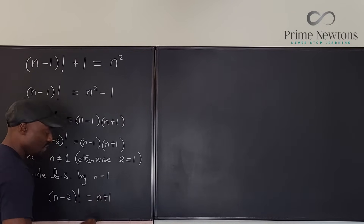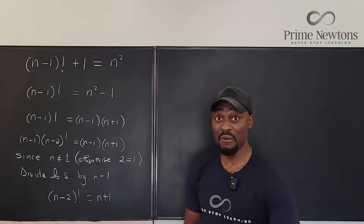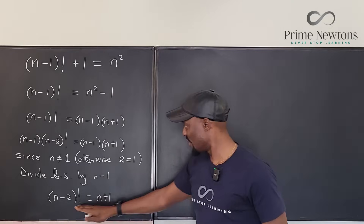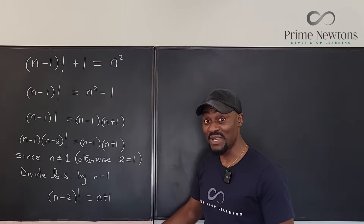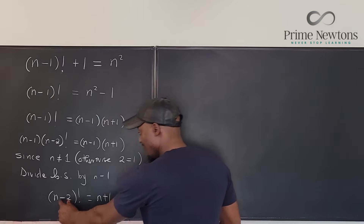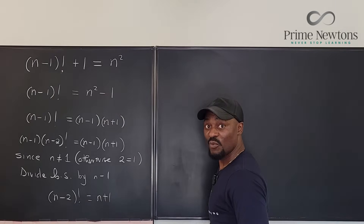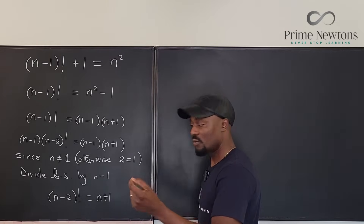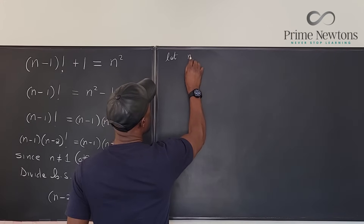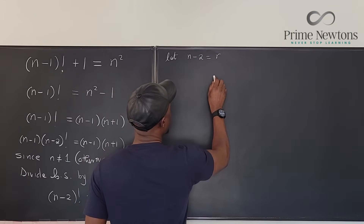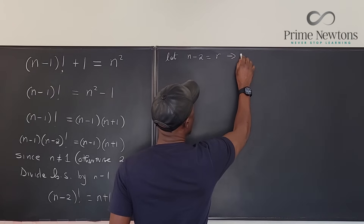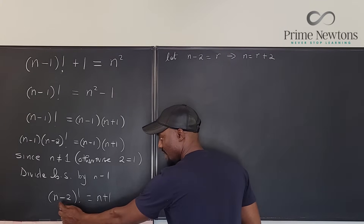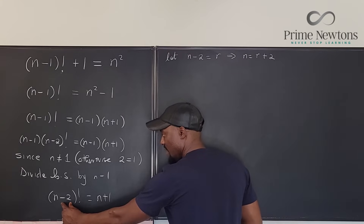Now it looks like we're back to where we started but at a much simpler level — no squares to deal with. To make this cleaner, I'm going to substitute: let n-2 equal r, which implies n equals r+2.